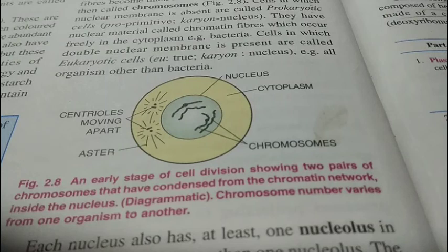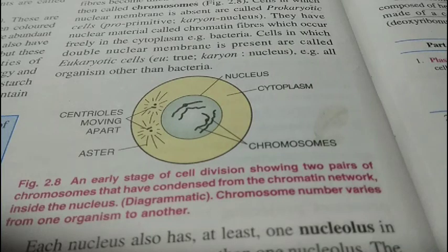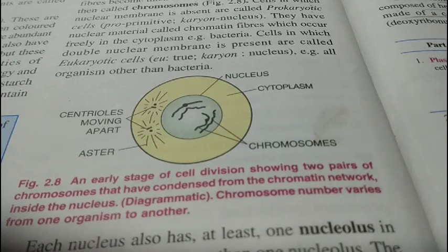For example, the chromosome number in dog is 78, whereas the chromosome number in lion is only 38. Even though the chromosome number is less in lion, the size of the lion is much bigger than a dog — it is more muscular and more carnivorous. So one must not get confused that chromosome number determines the size of the body.